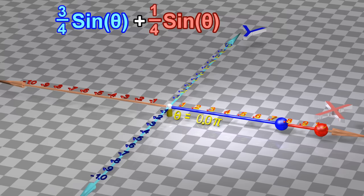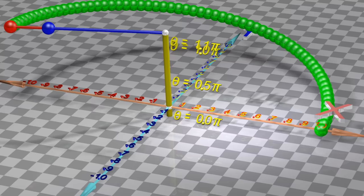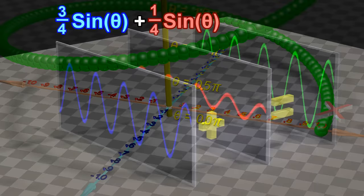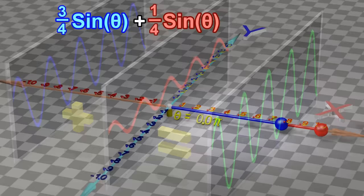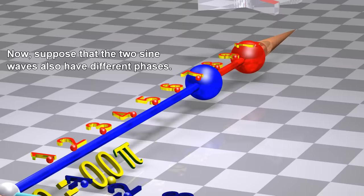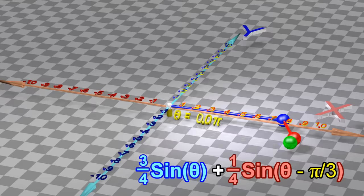Suppose we have two sine waves that are identical except for the fact that they have different amplitudes. If we add these two sine waves together, the result can be represented graphically as shown. Now, suppose that the two sine waves also have different phases. The sum of these two waveforms can be represented graphically like this.